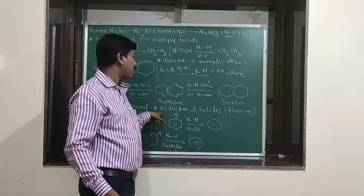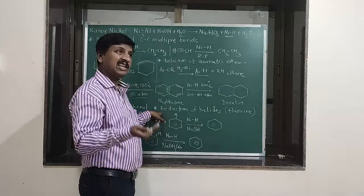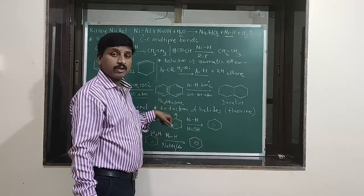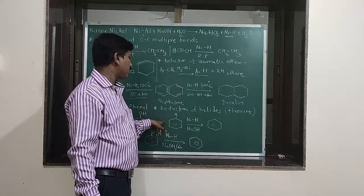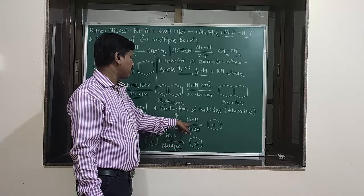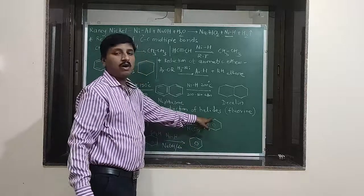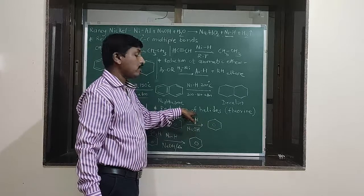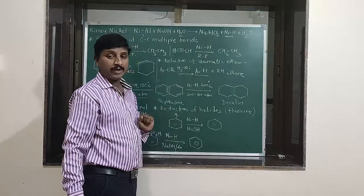The next important application of Raney Nickel is the reduction of halides. Halides are easily reduced or removed by Raney Nickel. All halogen elements are generally removed, including fluorine, which is relatively harder to remove. Aromatic halides treated with Raney Nickel in an alkaline medium have the halogen removed or replaced by hydrogen, giving the corresponding aromatic compound.